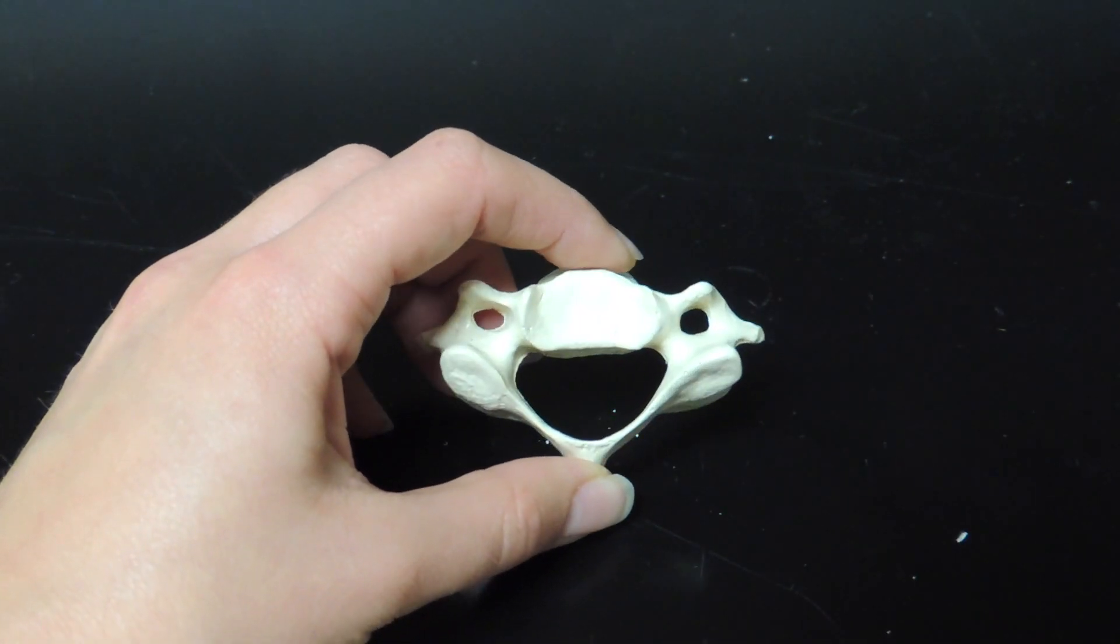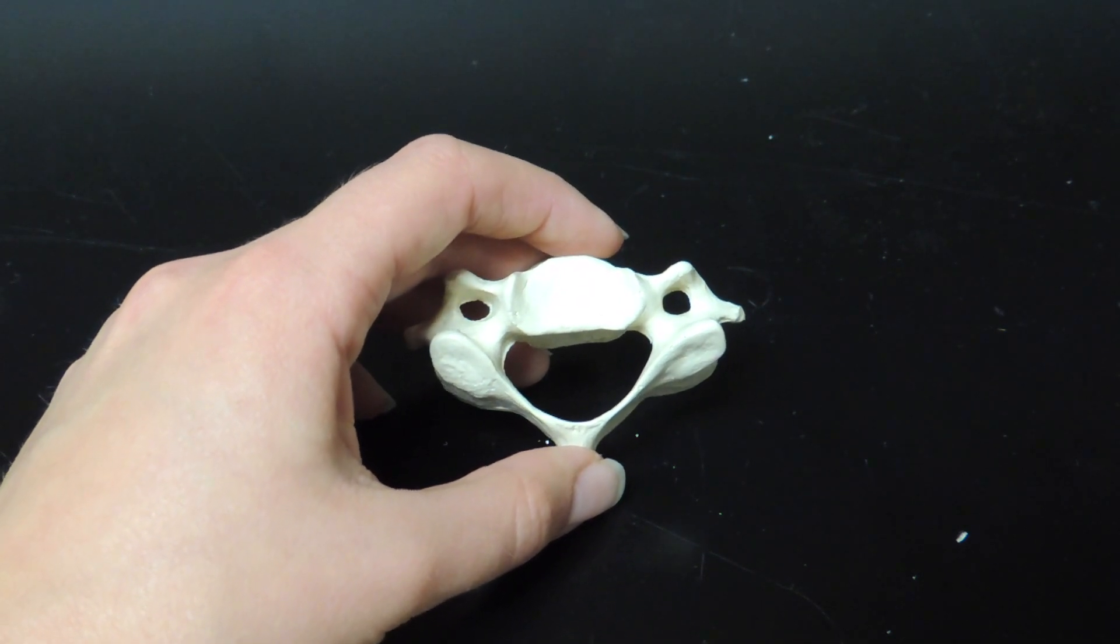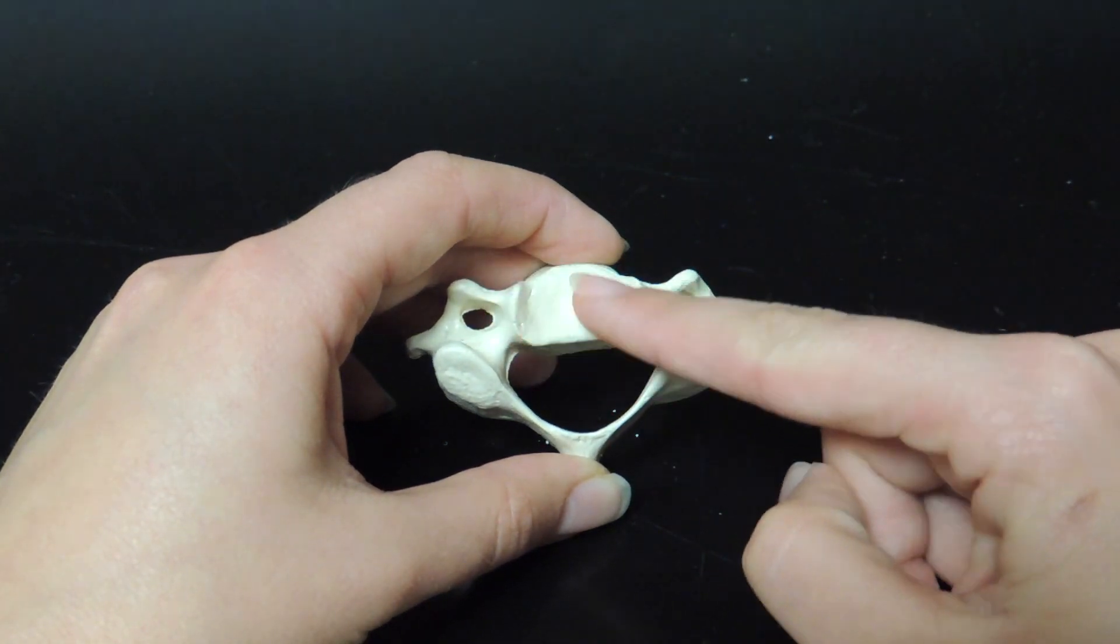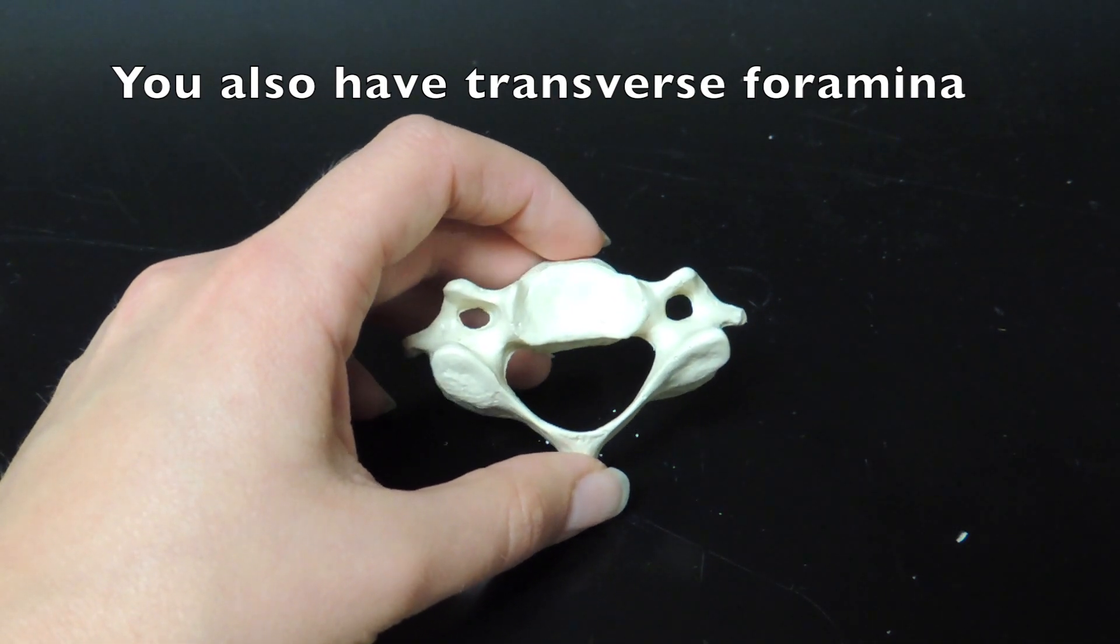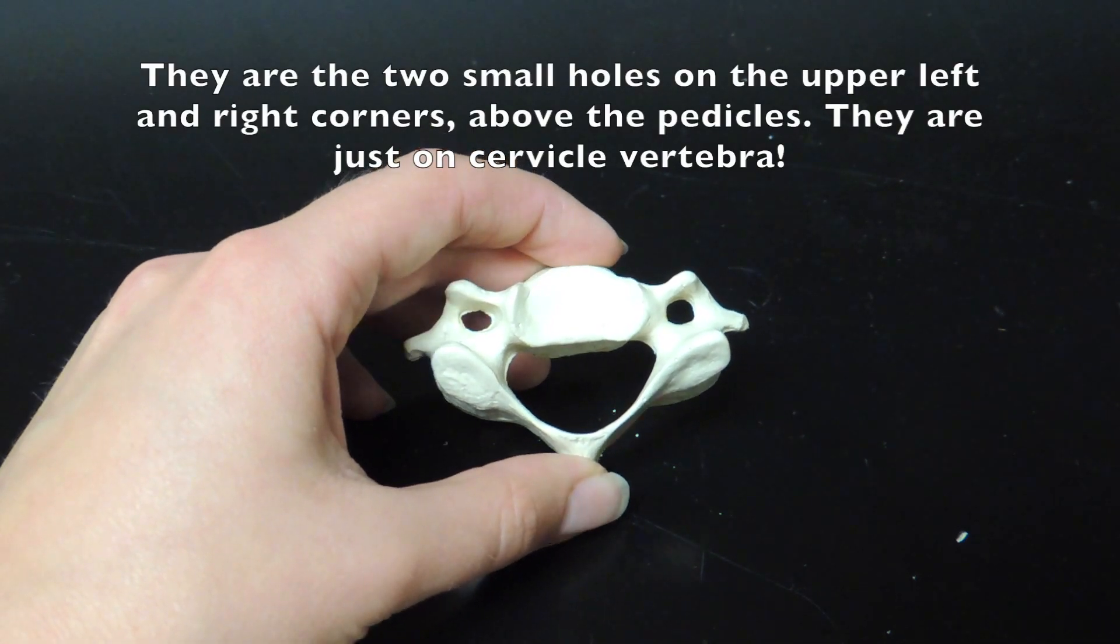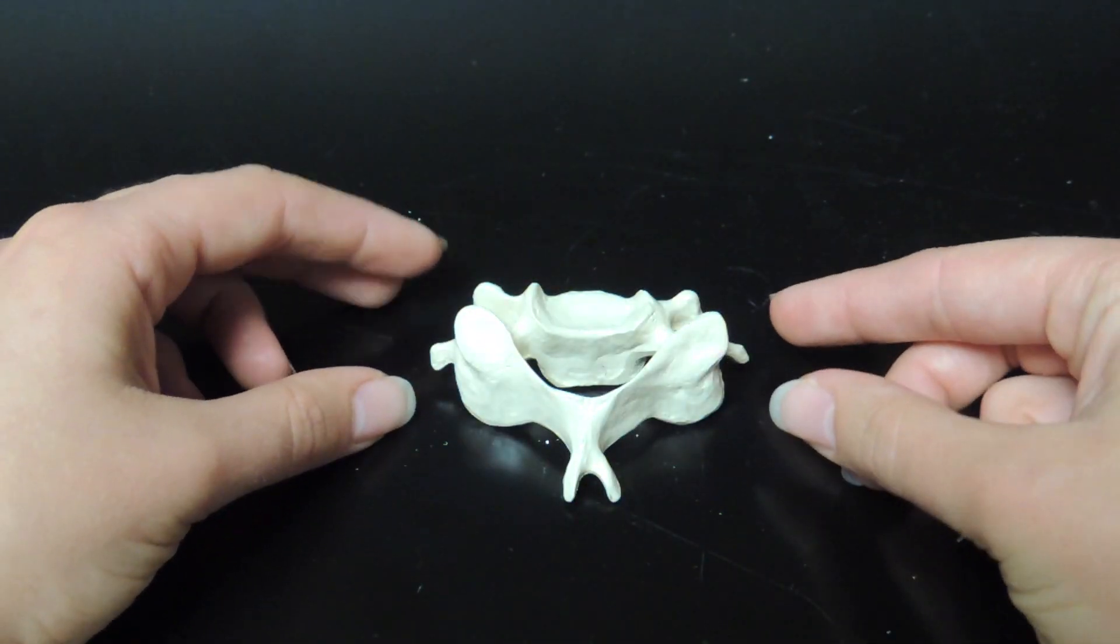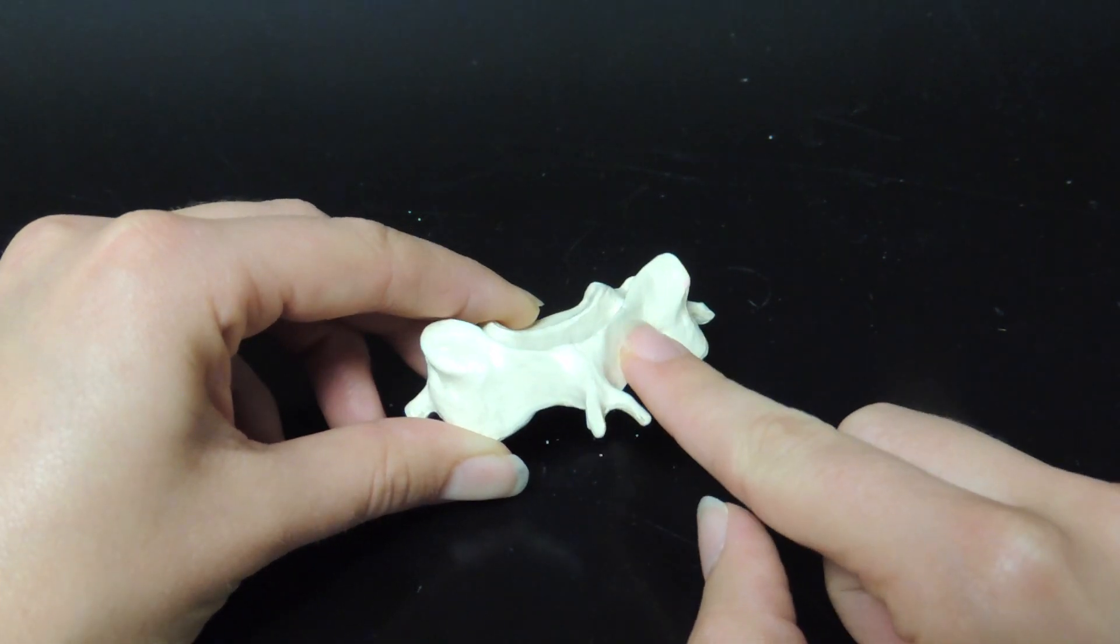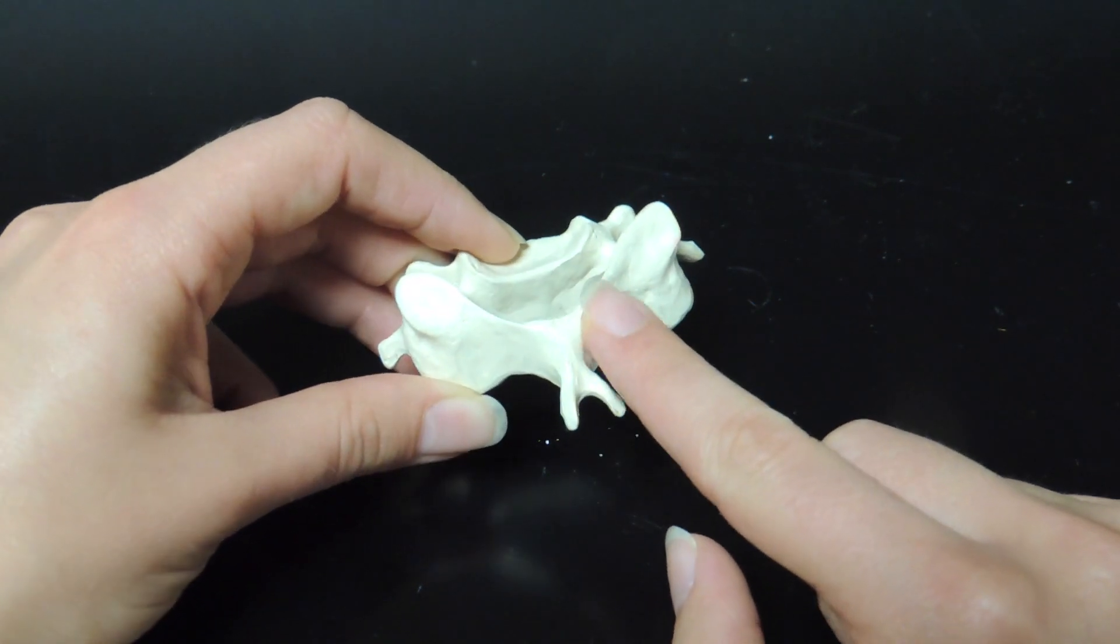The way I remember where the pedicles are is by the root word ped, meaning pedicure or pedestrian. It has to do with the feet, so the pedicles are the feet of the body. Next is the lamina, a surface here and here. Think of it like a laminated sheet of paper—smooth.